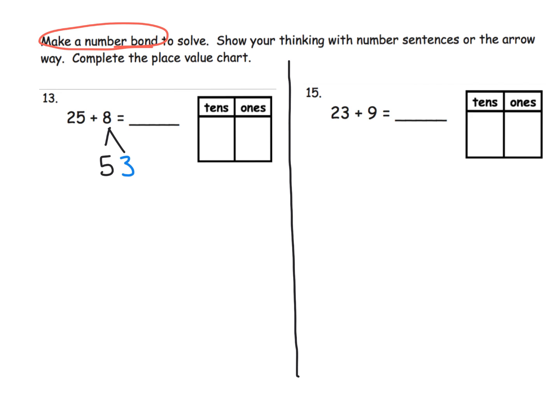Which means we're going to decompose this 8 to be 5 and 3, because now we can see that 25 plus 5 gives us 30.